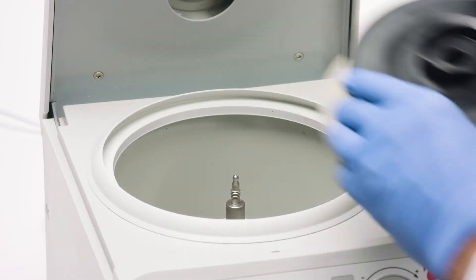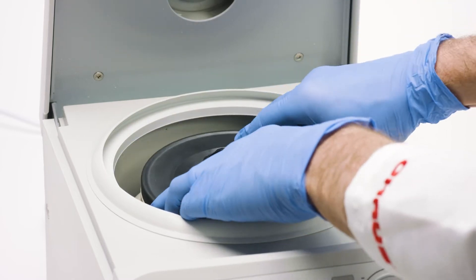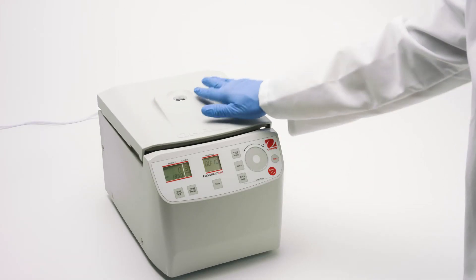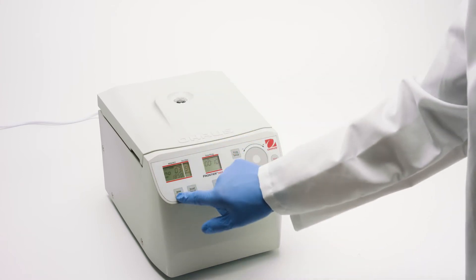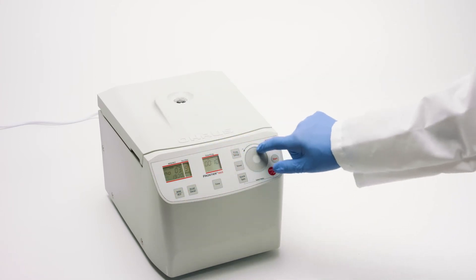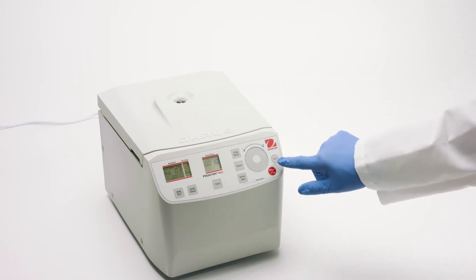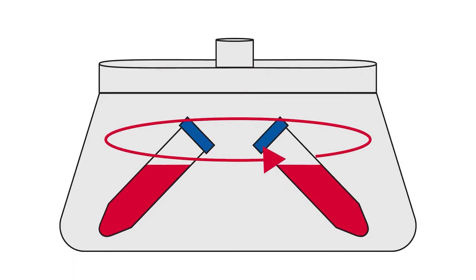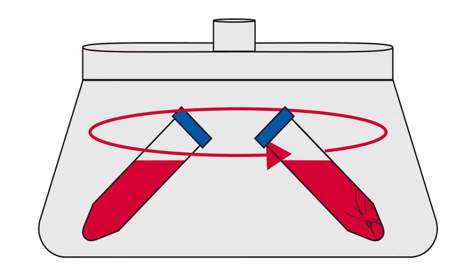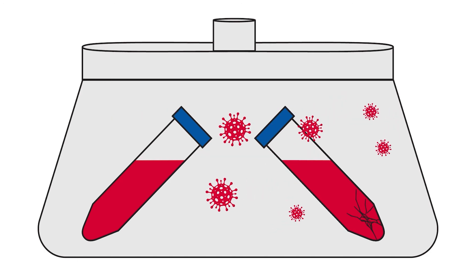Once locked, the rotor can be safely placed into the centrifuge. Centrifugation can begin. In the event of a possible tube breakage, aerosols will be contained within the sealed rotor.